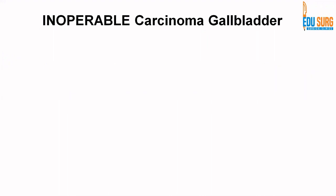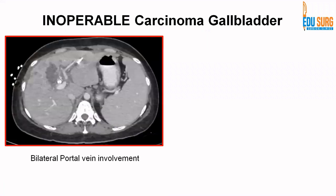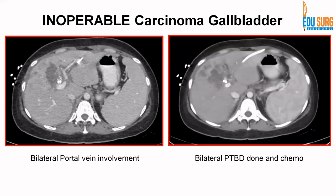Coming to examples of inoperable biliary tract cancers: in this scan, this is a patient of gallbladder cancer. The gallbladder fossa is completely replaced by a mass, but the problem is that the portal vein is involved bilaterally, making this case not surgically resectable. These patients commonly present with jaundice as the portal triad gets involved. We performed bilateral percutaneous biliary drainage and started this patient on chemotherapy, with the intent of palliation only.